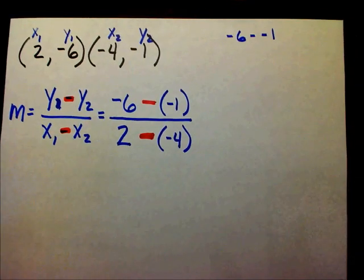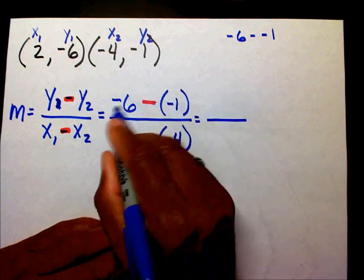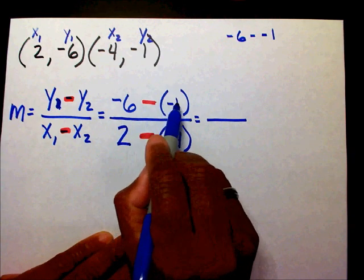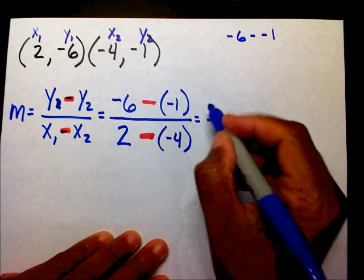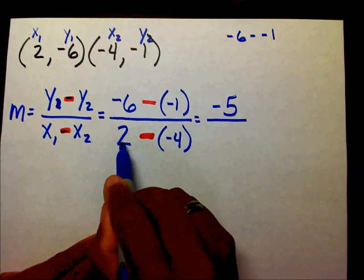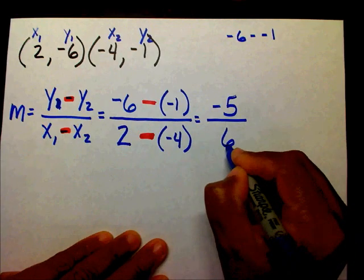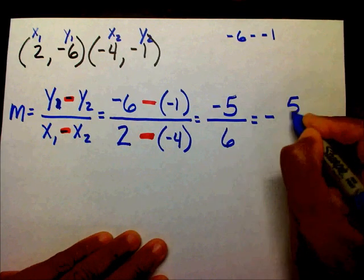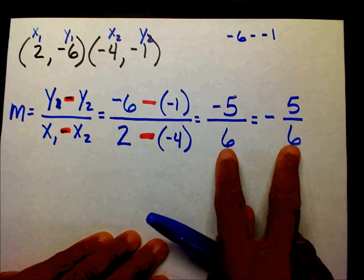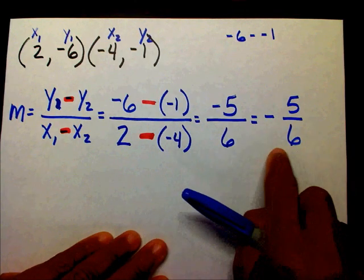I have negative 6 minus negative 1, which is negative 5. I have 2 minus negative 4, which gives me positive 6. So the slope equals negative 5 over 6, which I can write as negative 5/6.